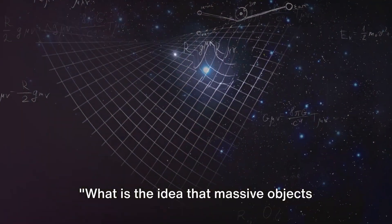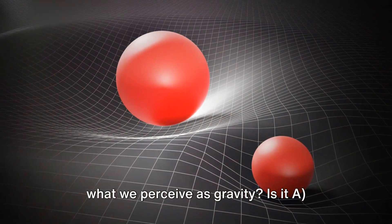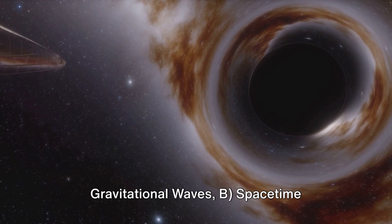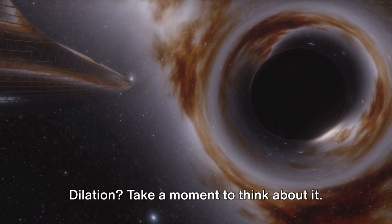What is the idea that massive objects cause a dip in space-time leading to what we perceive as gravity? Is it A. Gravitational waves, B. Space-time curvature, or C. Relativistic time dilation?